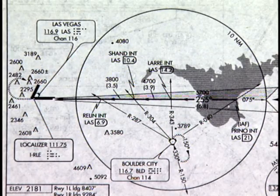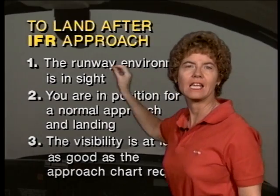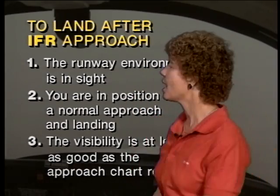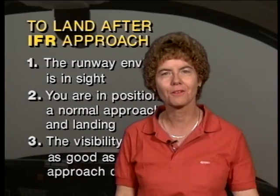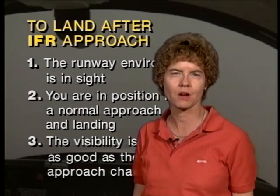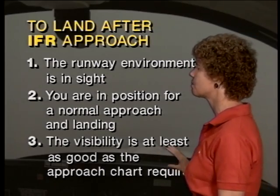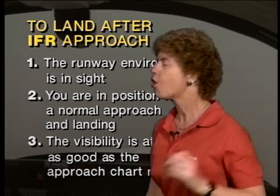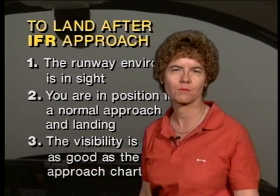You're shooting an instrument approach. What do you have to have to land at the end of an instrument approach? You have to have three conditions all existing together. Number one, you have to have the runway or the runway environment in sight. Number two, you have to be in position for a normal approach and landing — no aerobatics allowed to get yourself lined up on final once you see the runway. And number three, the visibility has to be at least as good as the approach chart requires. All three of those have to exist in order for you to land at the end of an instrument approach.